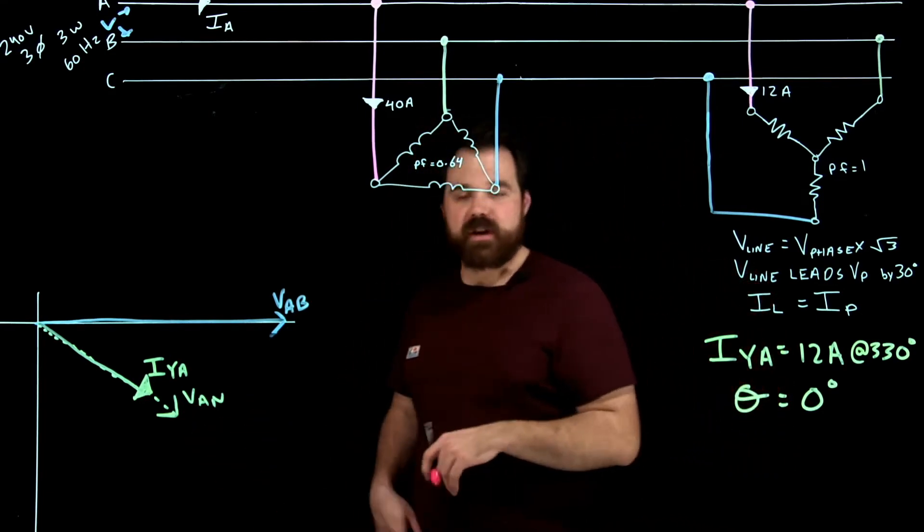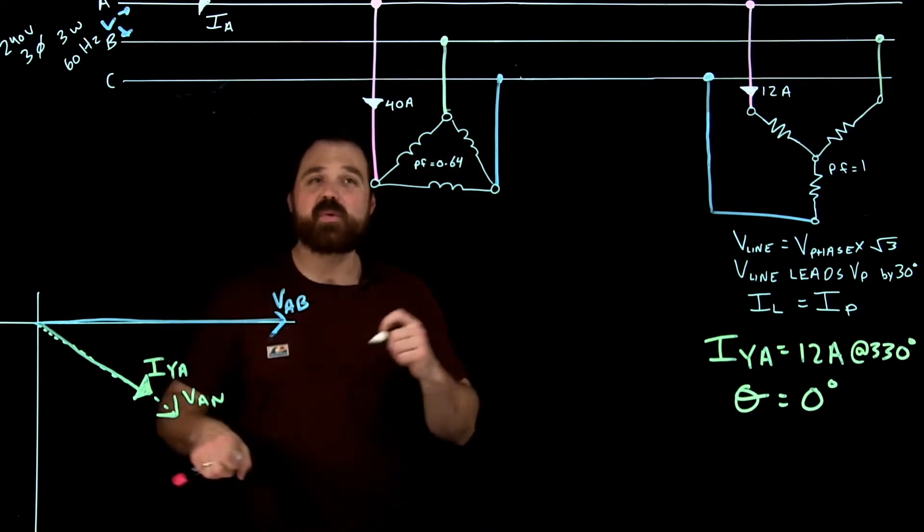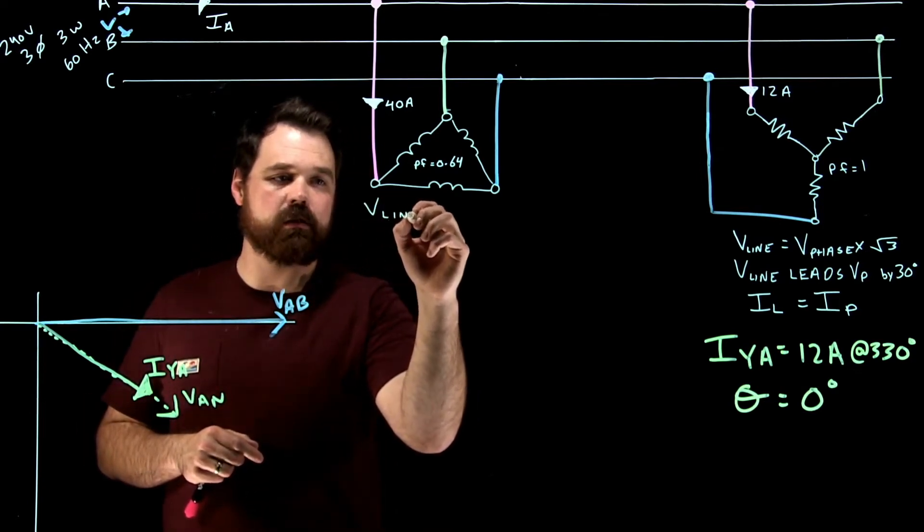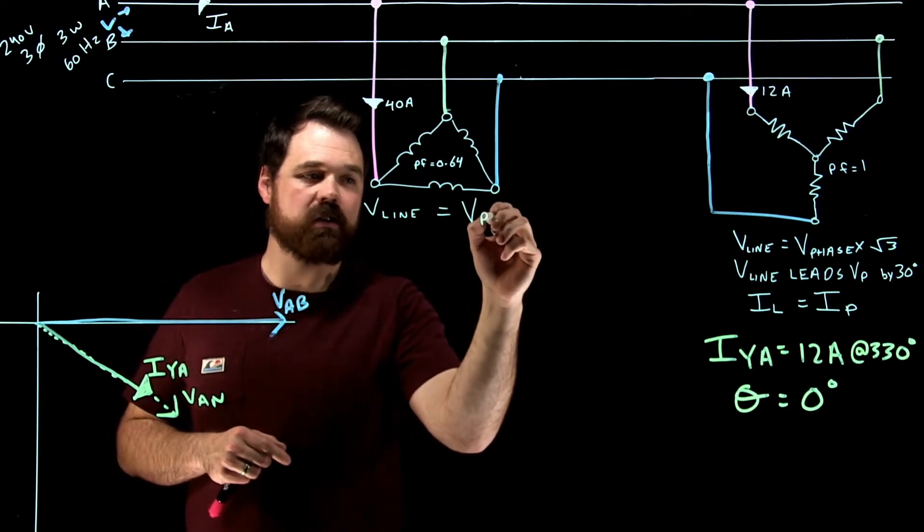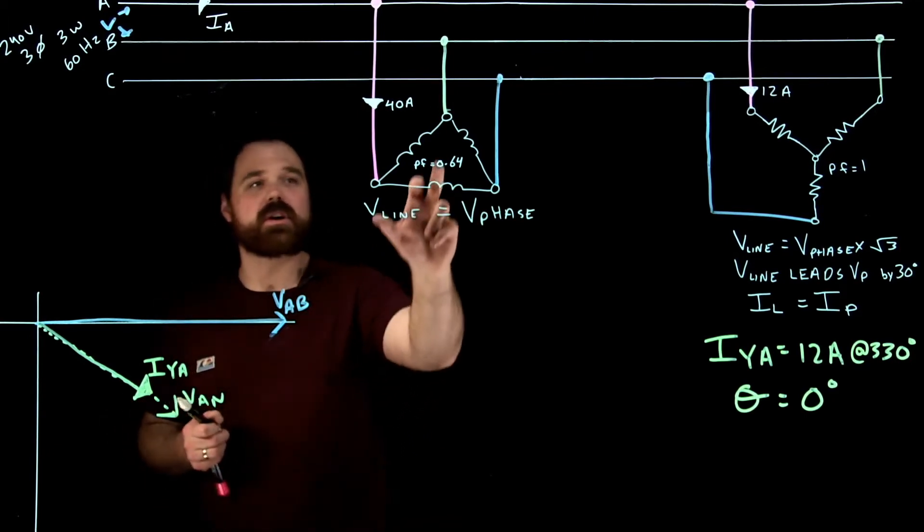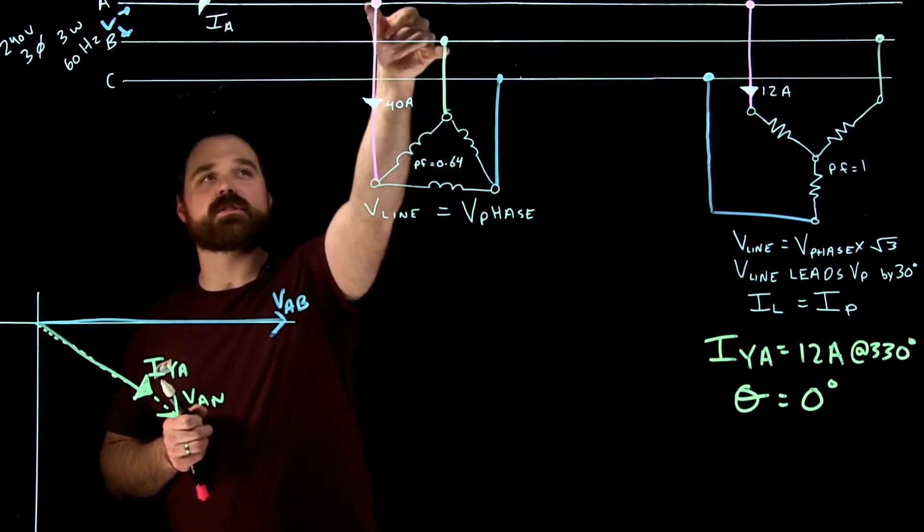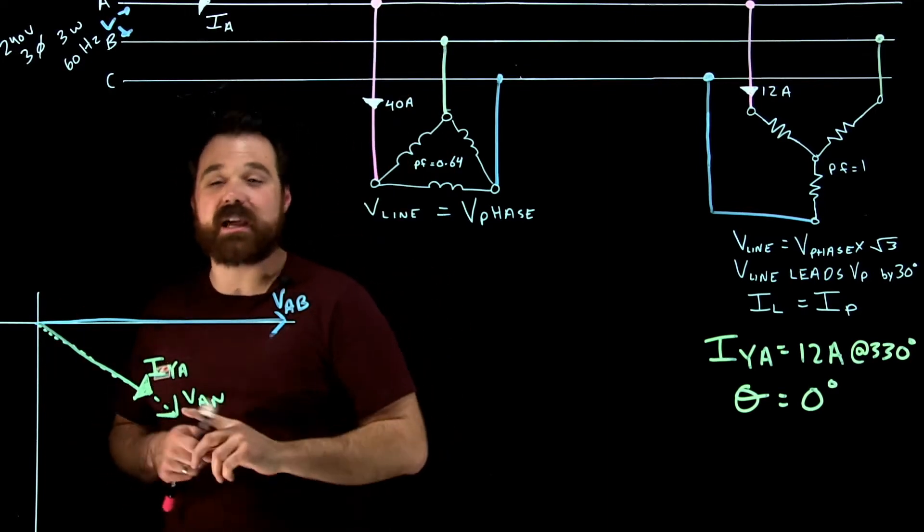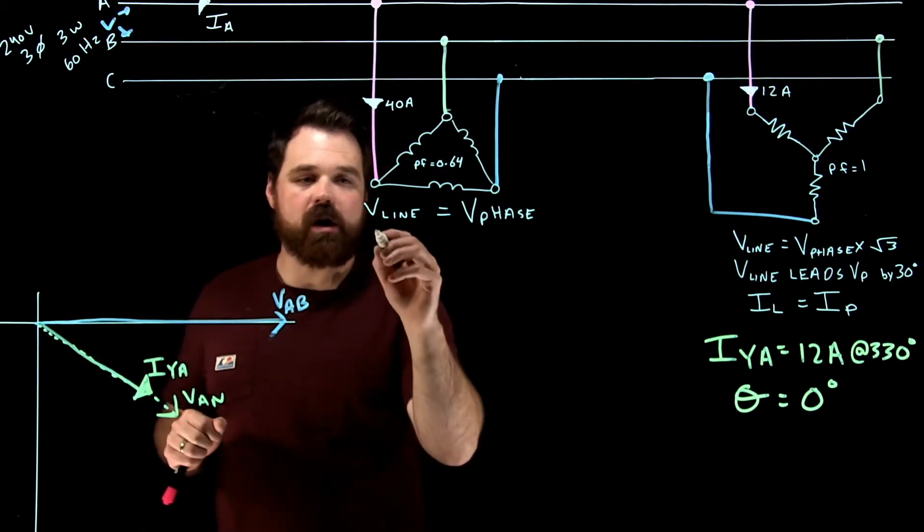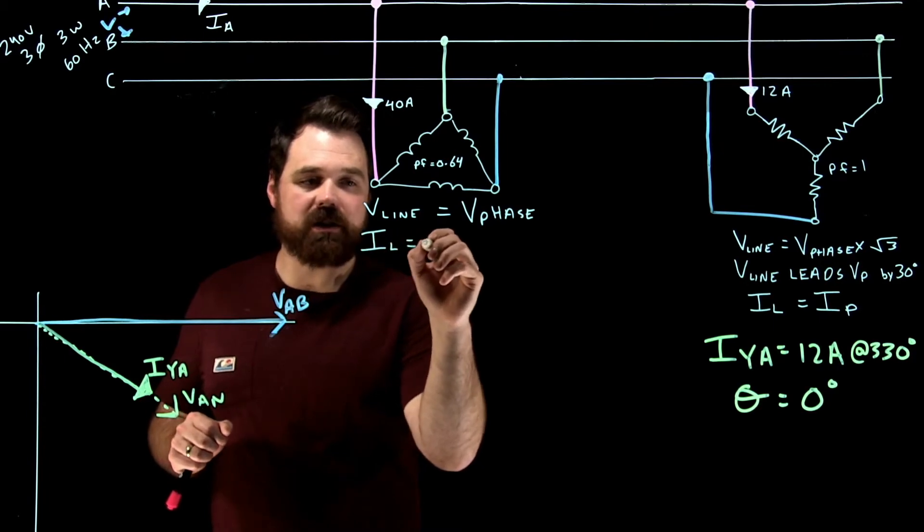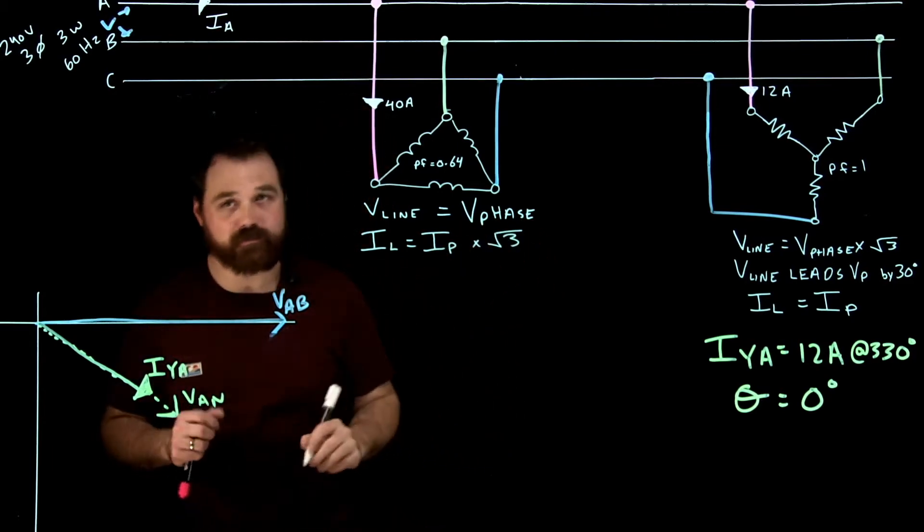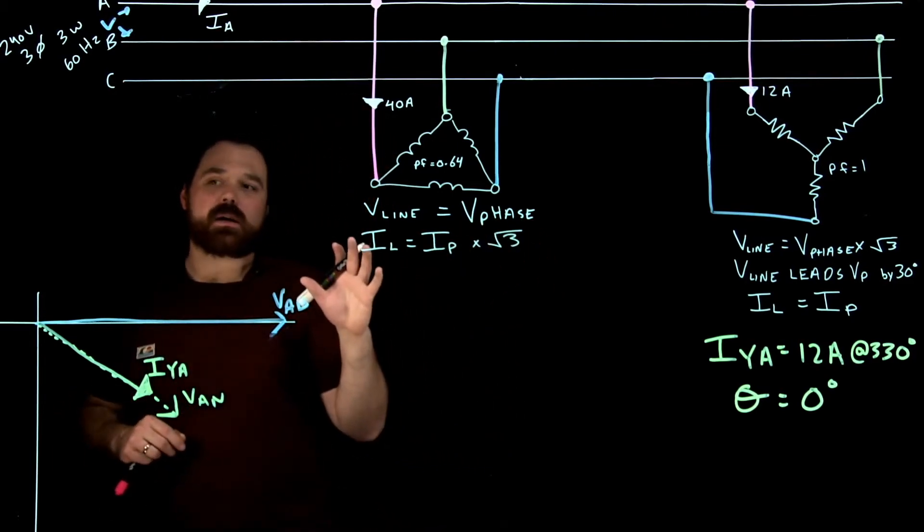So then I move on to my delta here. Now with delta, I have a couple rules that are really important as well. In delta, what we see is that our V line equals our V phase. So our phase current and our line current are the same. My voltage here is the same as my voltage up there. We've got V A to B as our reference. But what changes here is our current. Our I line is equal to I phase times the square root of three.